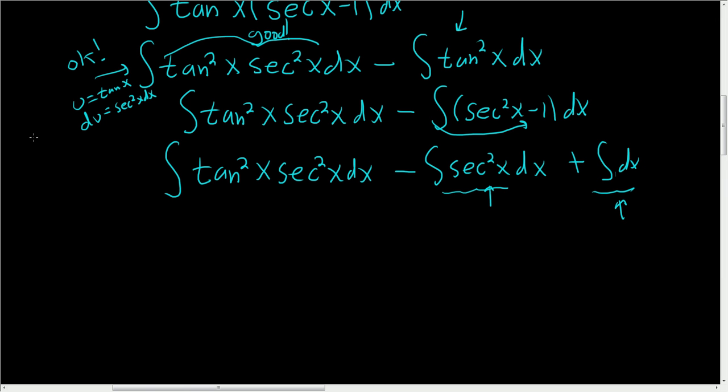So let's work this one out. I wrote it up here, but let me write it again. So u will be tangent. And then du will be secant squared x dx. This will become u squared du minus tangent of x. That's this one, plus x plus a constant.